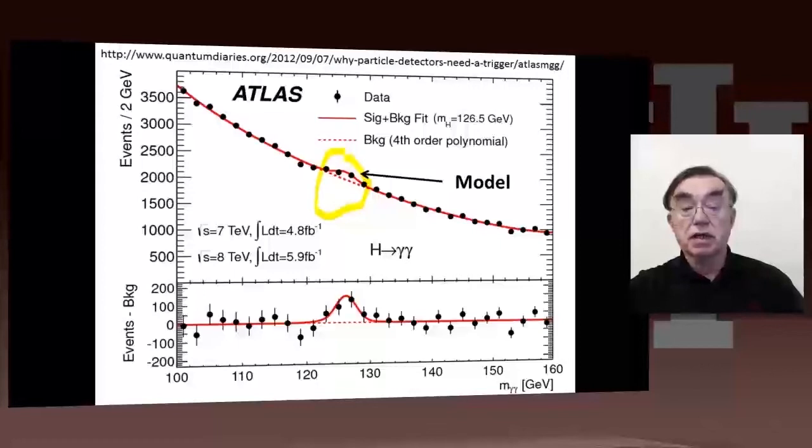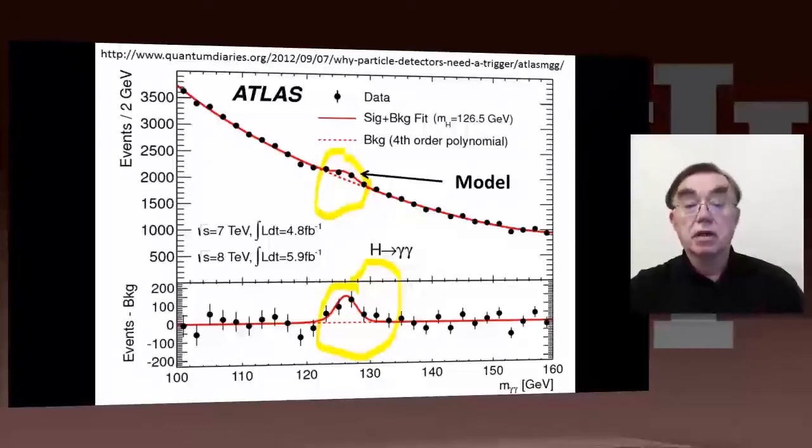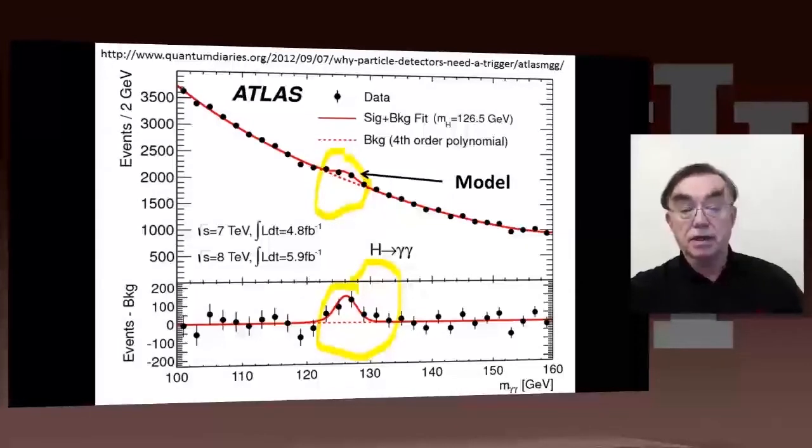Then they make a model, which is a smooth background plus a bump, which is called the signal. That's the solid line, and then the dashed line is the pure background, which is a smooth polynomial. And then they subtract it to get the pure Higgs, and that's seen here. This rather modest-looking bump is the Higgs particle, which is, of course, of fundamental importance to science, because it underlies how the basic laws of nature are built and how the fundamental particles interact.